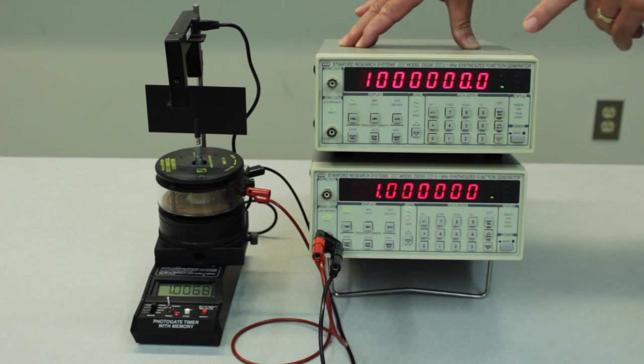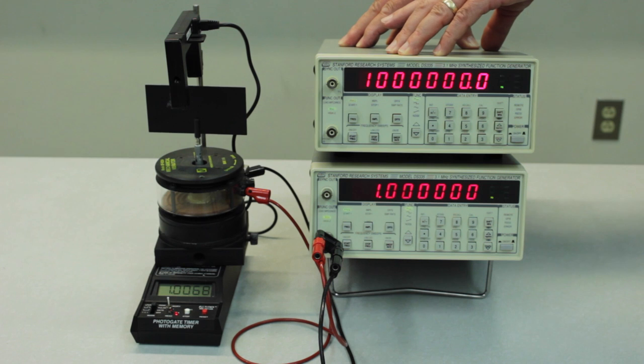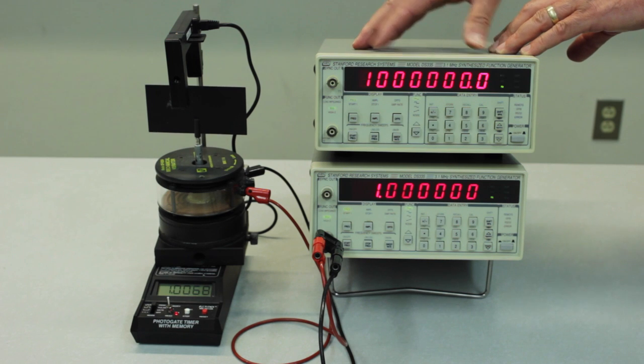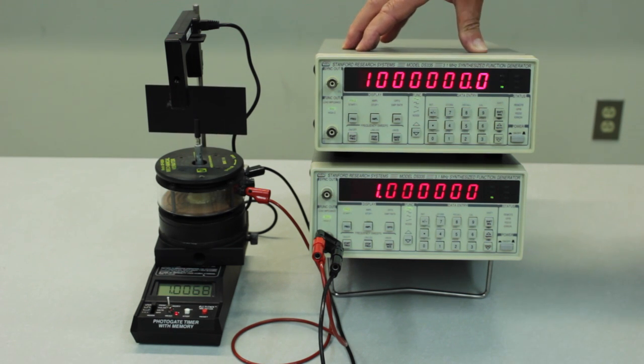What that means is simply that instead of being good to a part in 10 to the 6th it's only good to about a part in 10 to the 5th. But that's still plenty good enough to use to calibrate the photo gate timer. So don't worry.